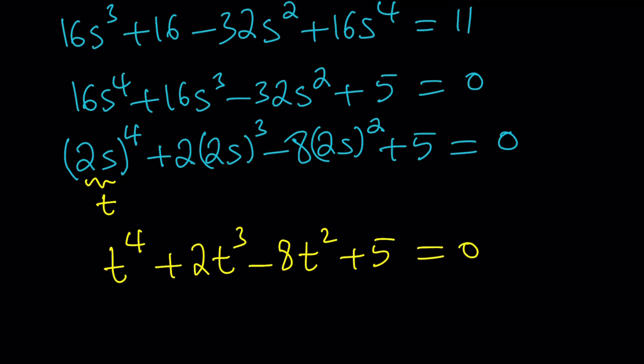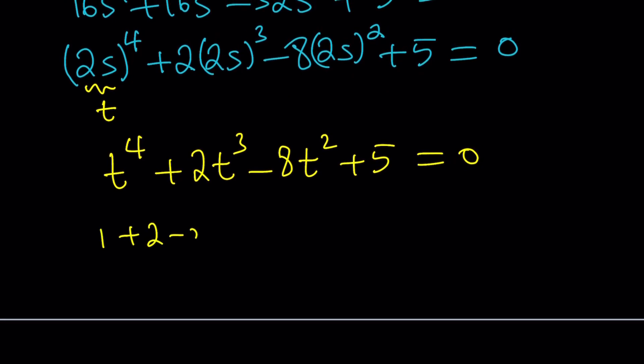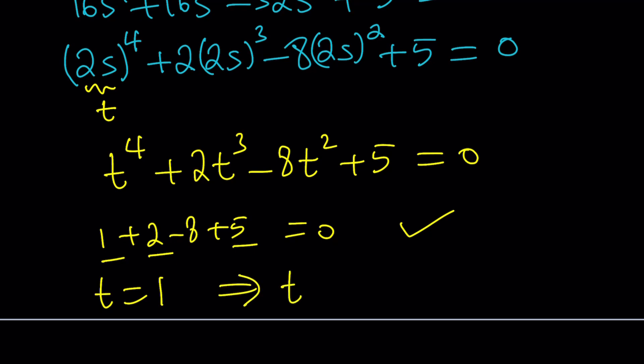One thing I always say when we get a monic polynomial equation: check the sum of the coefficients. Here, 1 plus 2 minus 8 plus 5 equals 0. So t equals 1 is a solution, which means by the factor theorem that (t minus 1) is a factor.